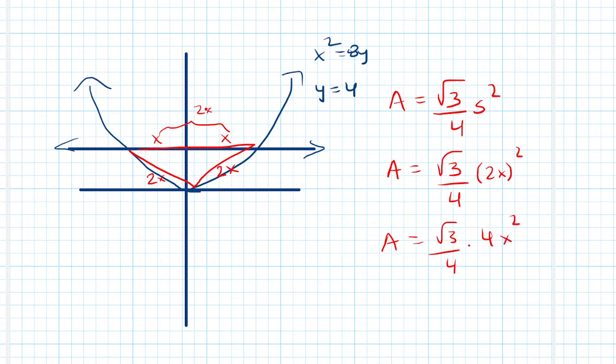The 4s are going to cancel, and then x² = 8y, so this area will depend on y, which is the square root of 3 times 8y. So we can just say 8√3y.